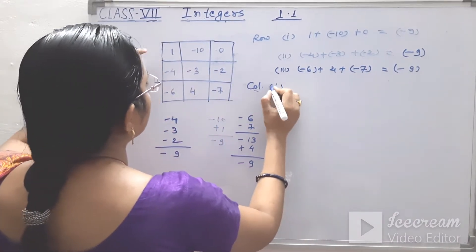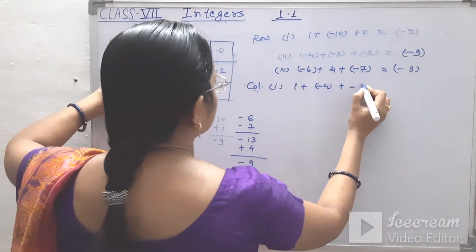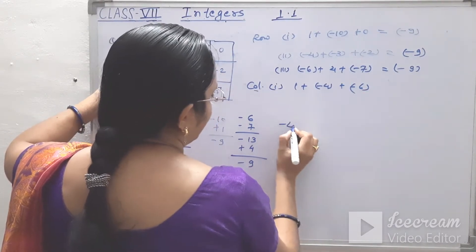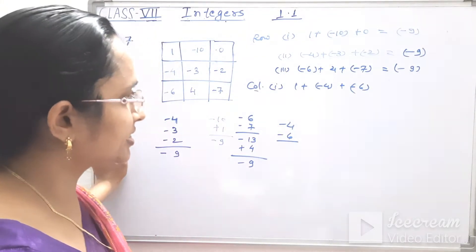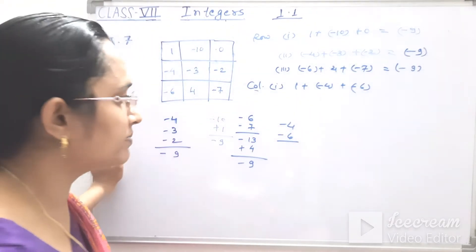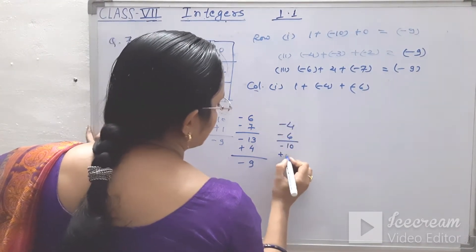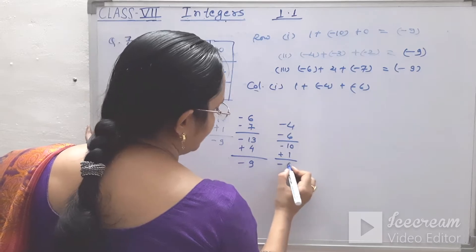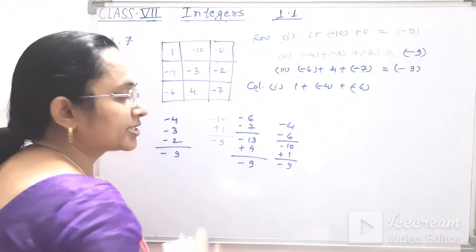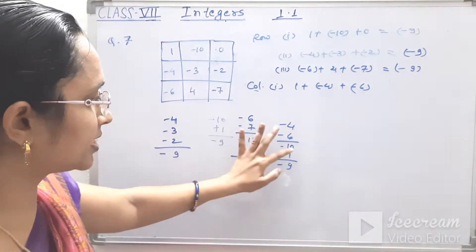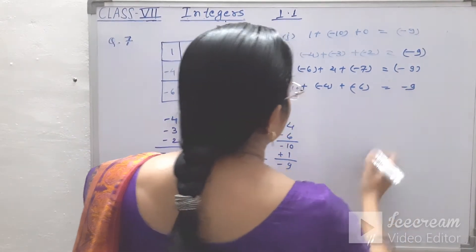First column: 1 plus minus 4 plus minus 6. Same sign numbers: minus 4 and minus 6 gives minus 10, and plus 1. Minus 10 plus 1 equals minus 9. Since 10 is greater than 1, the sign is minus — answer is minus 9.